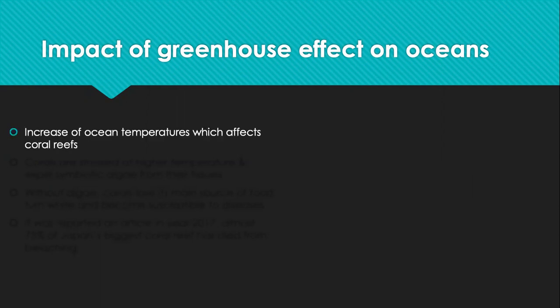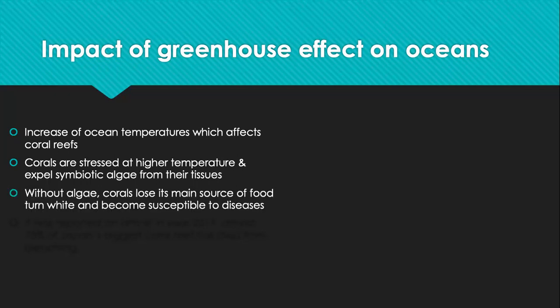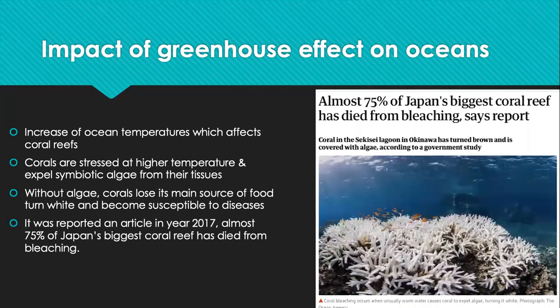There is an increase of ocean temperature which affects the coral reef. Corals are stressed at higher temperatures and they expel symbiotic algae from their tissues. By doing so, corals lose their main source of food, turn white or bleach, and become susceptible to diseases. In an article from 2017, almost 75 percent of Japan's biggest coral reef has died from bleaching. This is in Okinawa, where the coral has turned brown and is covered with algae.